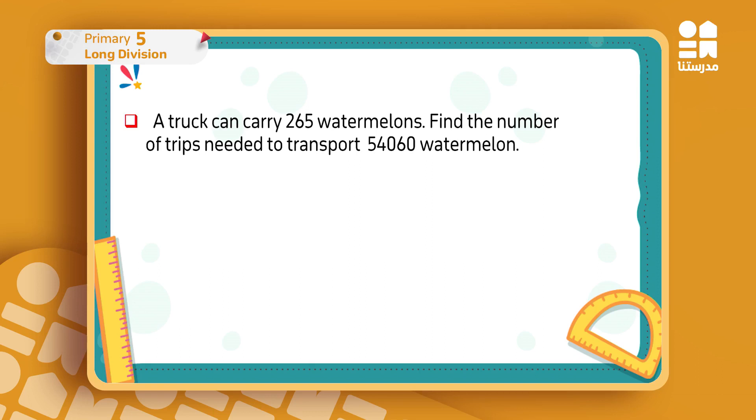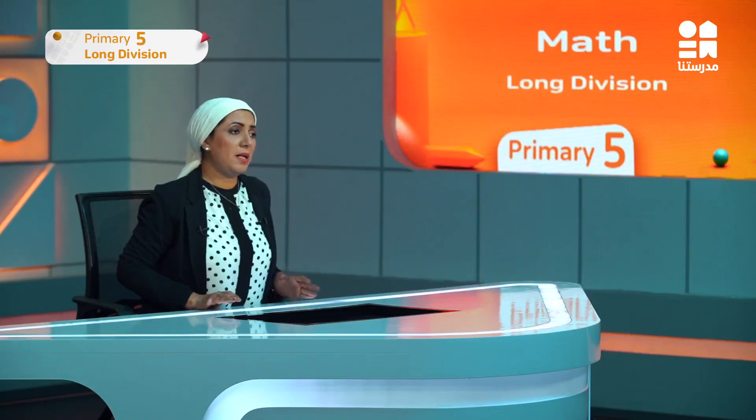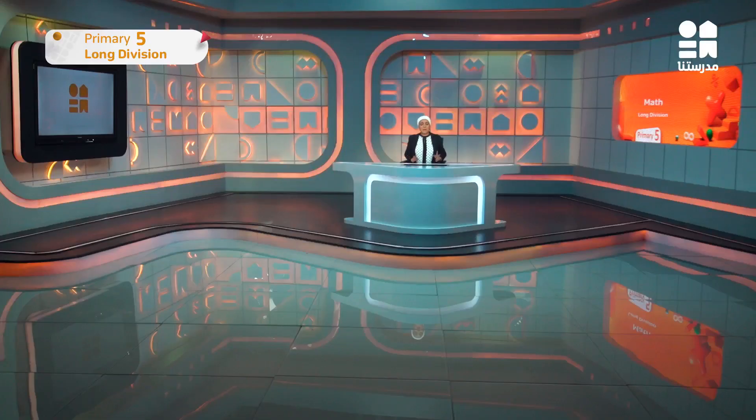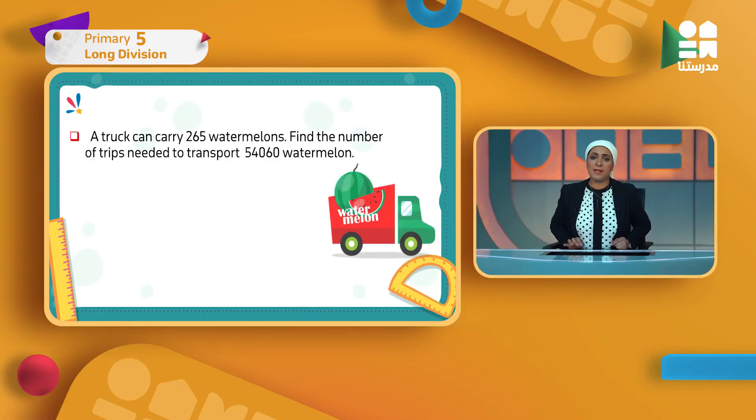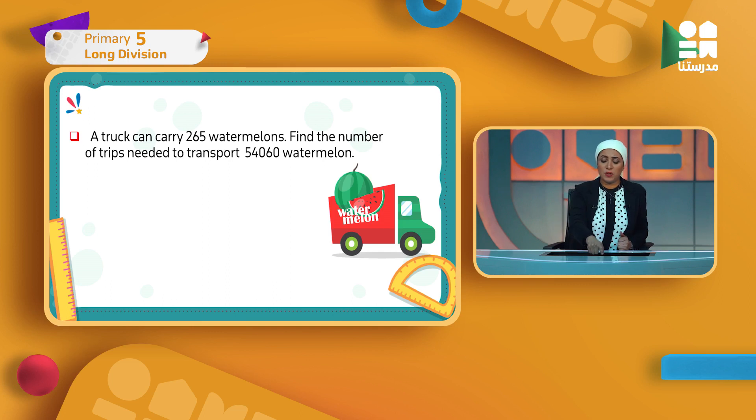A truck can carry 265 watermelons. Find the number of trips needed to transport 54,060 watermelons. I have a big truck that transports watermelons. It will transport 265 watermelons. We want to know how many trips it will take to transport 54,060 watermelons. Again, this is division. 54,060 is my dividend and 265 is my divisor. I'll divide them by each other and follow the steps. I have five digits in the dividend, so I'll open five steps. Then we'll start answering: dad, mom, sister, and brother.